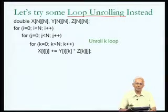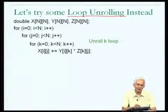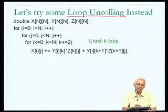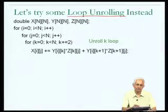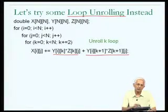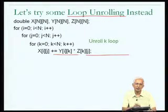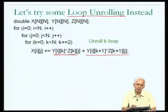By unrolling the k loop, I increment k by 2 and within the loop compute both y[i][k] * z[k][j] and y[i][k+1] * z[k+1][j], adding both to x[i][j]. Before unrolling, one multiplication and addition per iteration; after unrolling, two multiplications per pass, reducing the number of times the k loop executes.